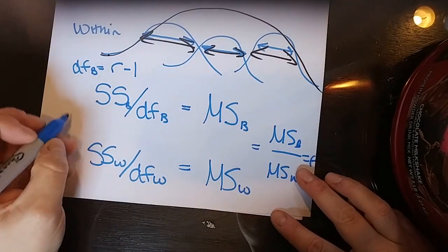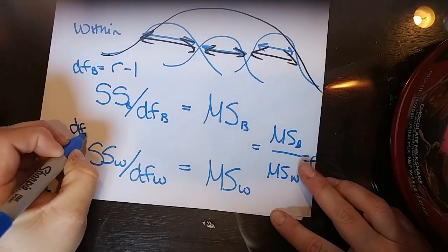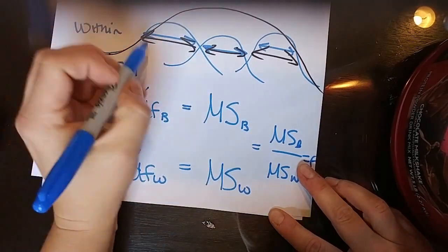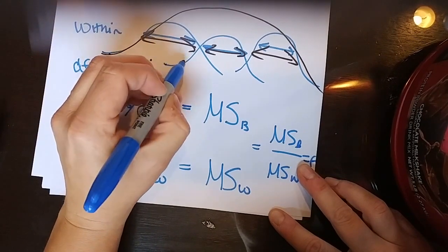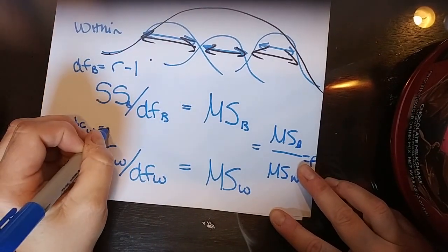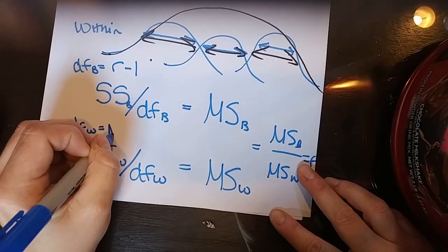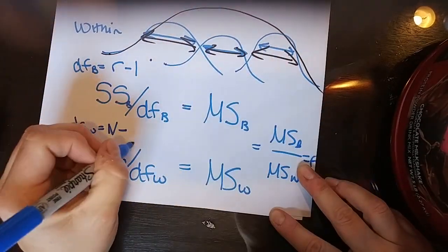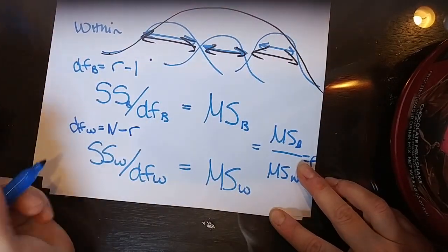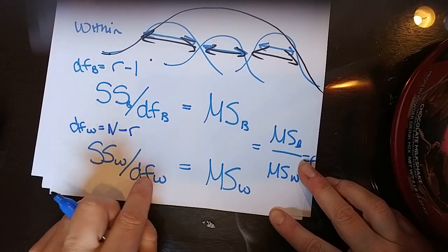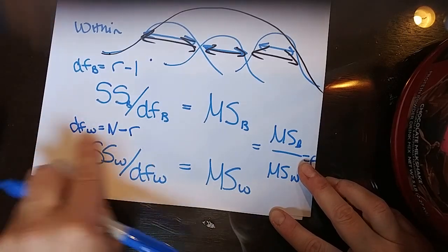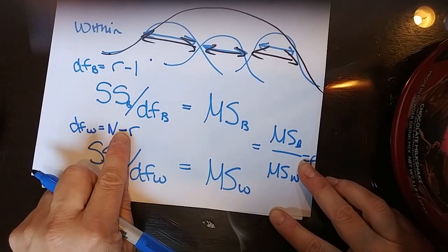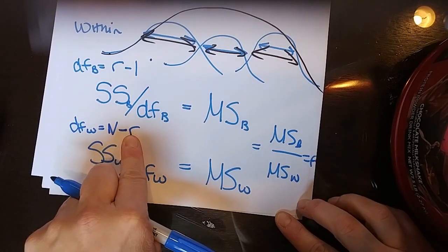The degrees of freedom for within is your total sample size minus the number of groups you have. I'm thinking about how each person differs from their own group mean, and you do that for each group. So the degrees of freedom for the sums of squares within is your total sample size minus the number of groups.